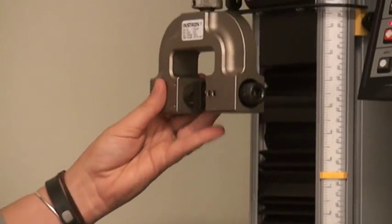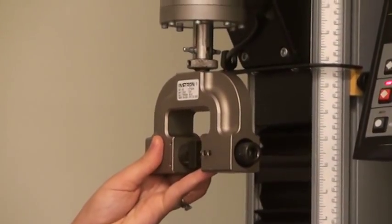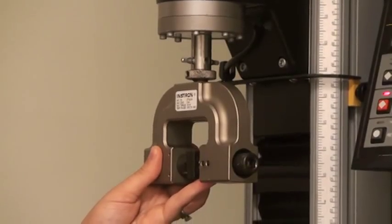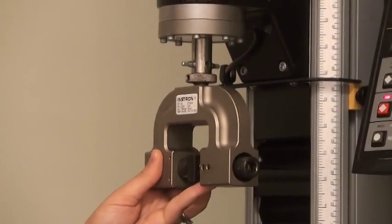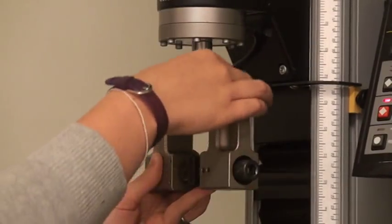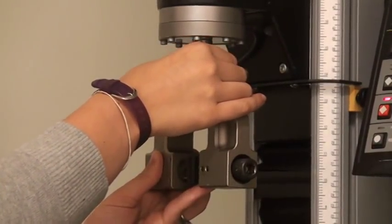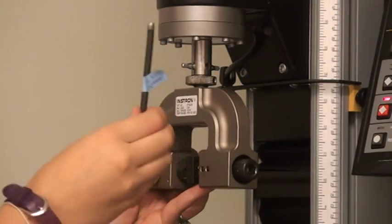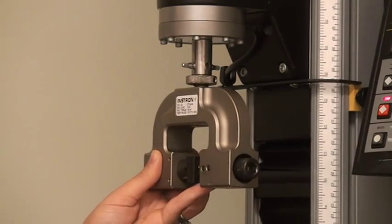While removing the upper grip, you should always keep one hand securely holding the grip to prevent it from falling and causing damage to the equipment or yourself. Loosen the upper lock nut by turning clockwise until it is stopped by the top face of the grip. Use the lock nut tightening tool if it is very tight.